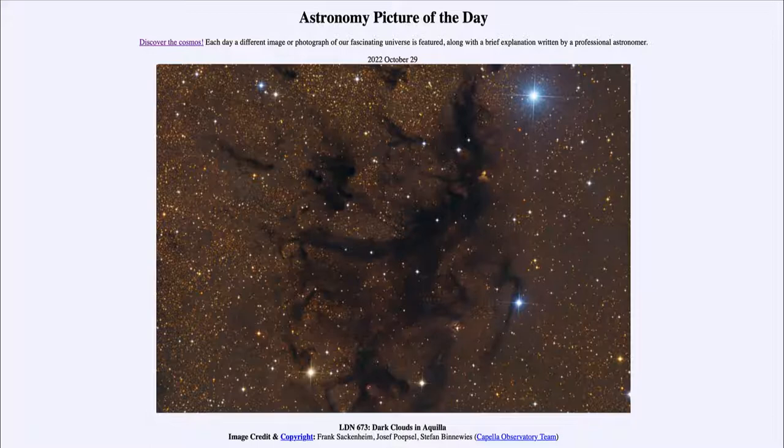Could we remove the dust, those dark areas would look just like the rest of the sky, filled with stars. These are actually darker, denser areas which are regions of star formation.